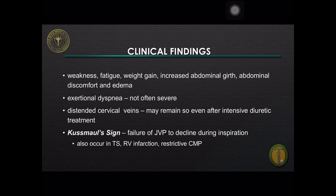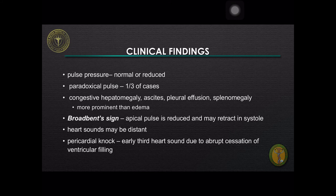Distended cervical veins may remain so even after intensive diuretic treatment. On physical examination, failure of the jugular venous pressure to decline during inspiration can be observed — this is known as the Kussmaul sign. The latter also occurs in tricuspid stenosis, RV infarction, and restrictive cardiomyopathy. The pulse pressure is normal or reduced. Paradoxical pulse is seen in one-third of cases. Congestive hepatomegaly, ascites, pleural effusion, and splenomegaly are usually seen and more prominent than edema.